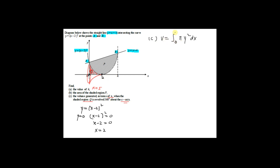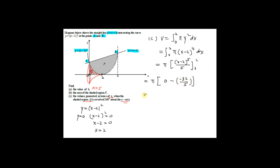So the volume is integration from 0 to 2 of pi y squared dx. Since y equal to x minus 2 squared, y squared equal to x minus 2 power 4. Taking out pi and integrating x minus 2 power 4 gives x minus 2 power 5 over 5, evaluated from 0 to 2. Substituting 2 gives 0; substituting 0 gives negative 2 power 5 equal to negative 32 over 5. Therefore the volume equals 32 over 5 pi cubic units.